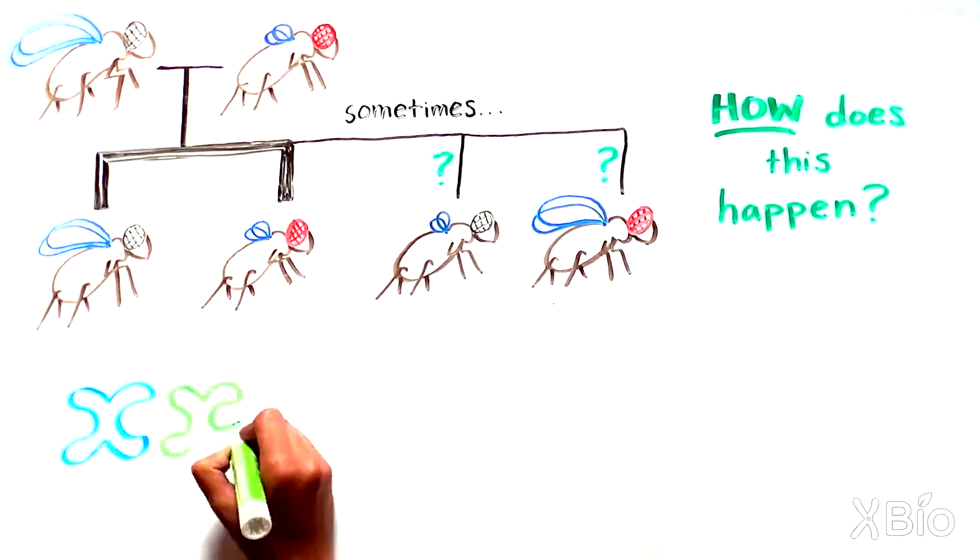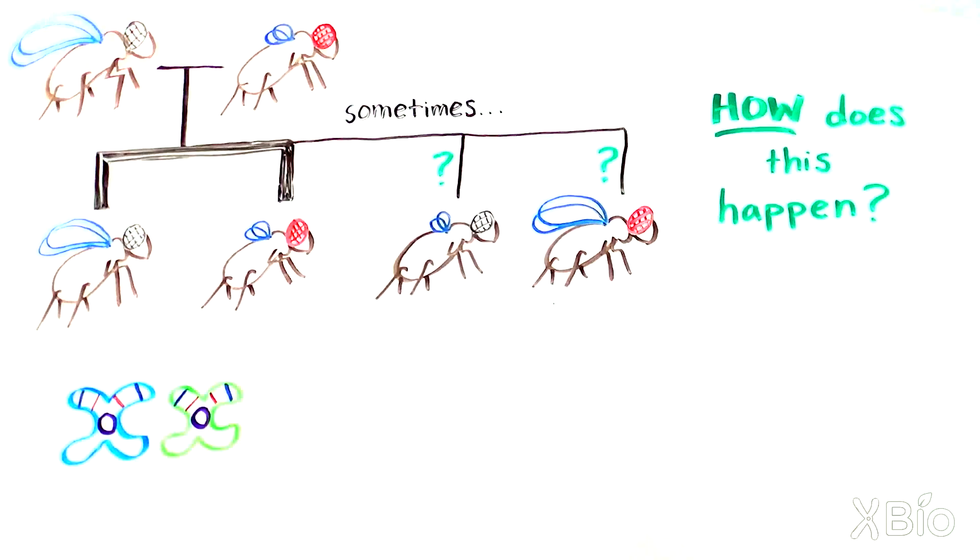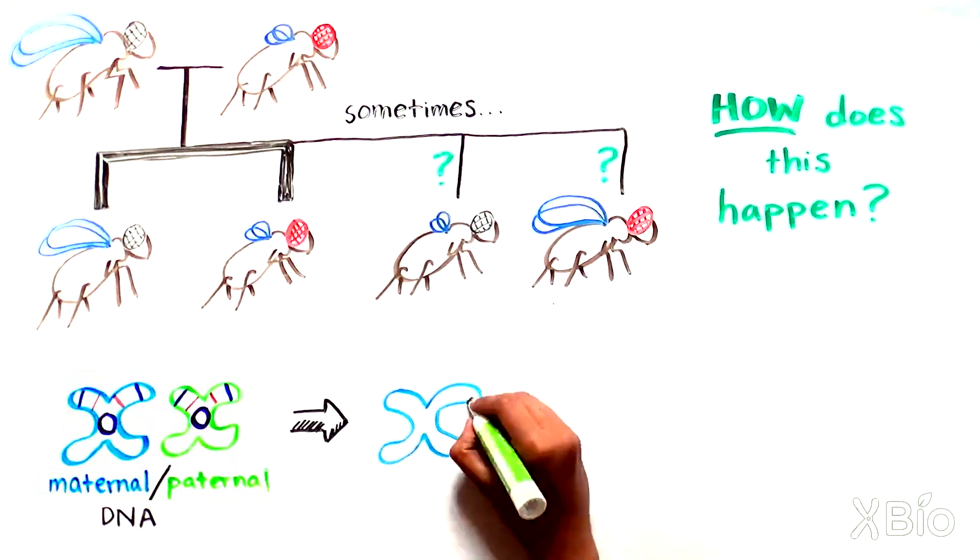Morgan's hypothesis, which we now know is correct, was that maternal and paternal chromosome pairs can exchange pieces of DNA with each other.